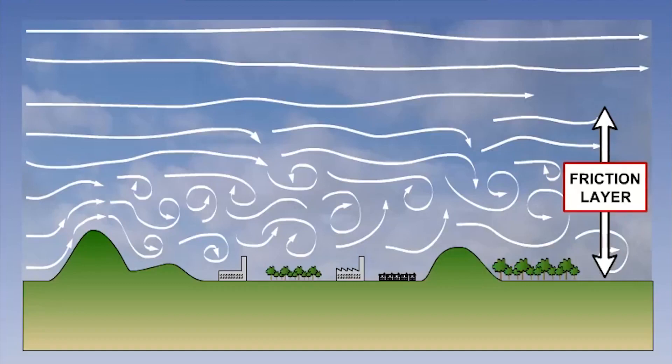Above this, the airflow is unaffected by the surface. The boundary of the disturbed surface flow and the undisturbed upper flow is called the friction level.